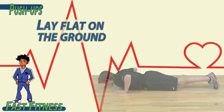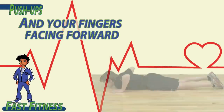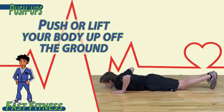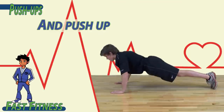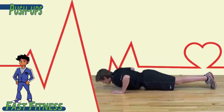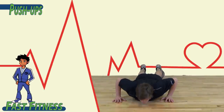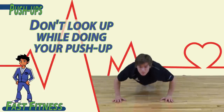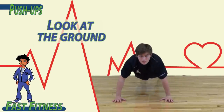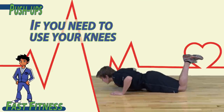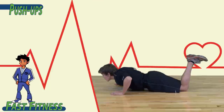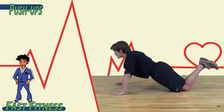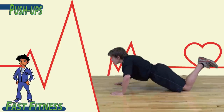To begin, lay flat on the ground with your hands underneath your shoulders and your fingers facing forward. Push or lift your body up off the ground, then drop down without touching the ground and push up — down, up, down, up. Don't look up while doing your push-up; look at the ground. If you need to use your knees, go ahead and lift your feet up off the ground.